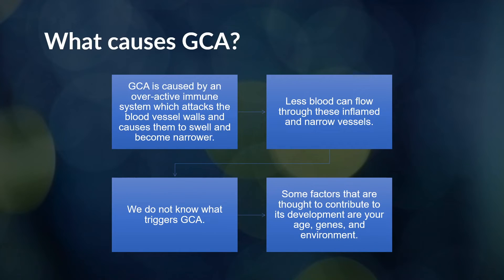So why does giant cell arteritis happen? It's essentially a dysfunction in the immune system — for reasons we don't fully understand — which attacks the blood vessel walls in those larger blood vessels and causes them to swell and have inflammation. As a result, the vessel becomes narrower, less blood flow happens, and we don't know why it happens. There's no specific trigger that we've been able to identify.